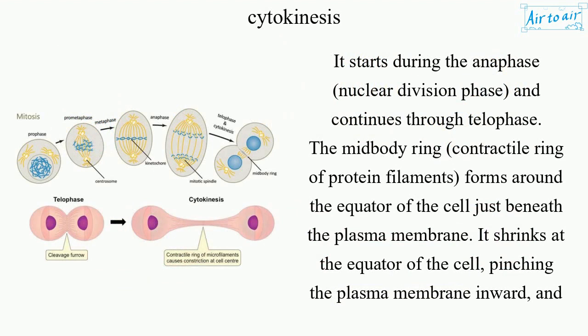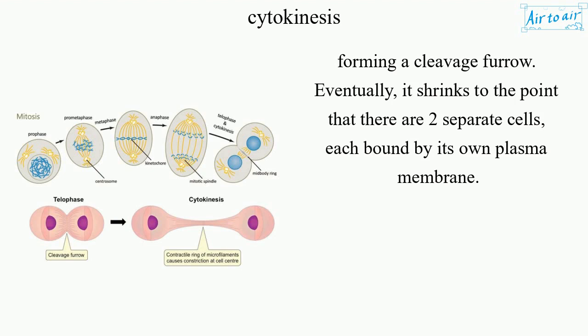It starts during the anaphase nuclear division phase, and continues through telophase. The midbody ring, a contractile ring of protein filaments, forms around the equator of the cell just beneath the plasma membrane. It shrinks at the equator of the cell, pinching the plasma membrane inward and forming a cleavage furrow.